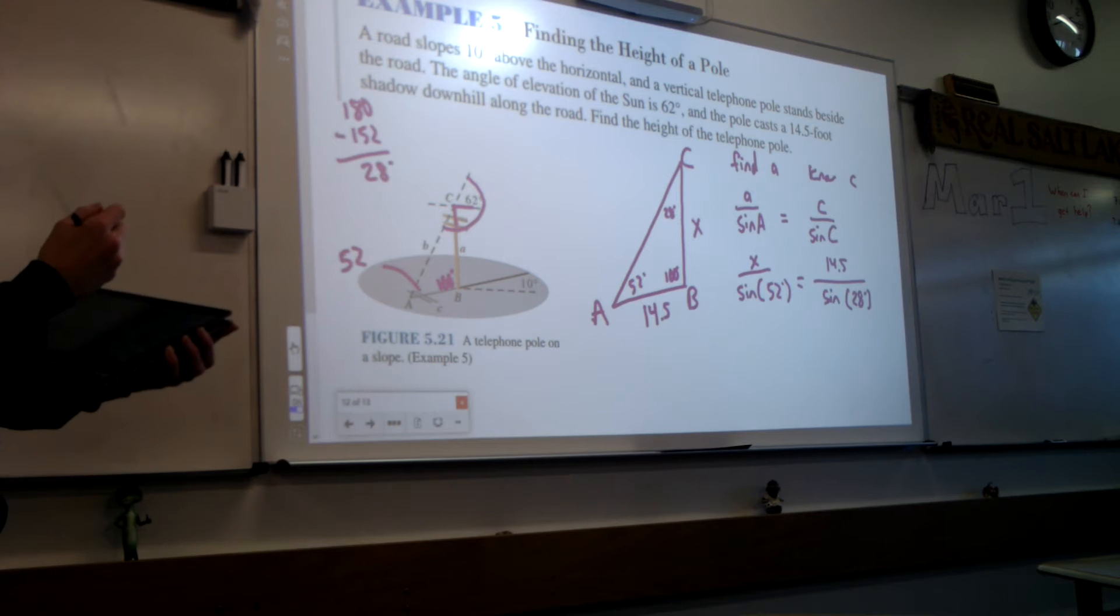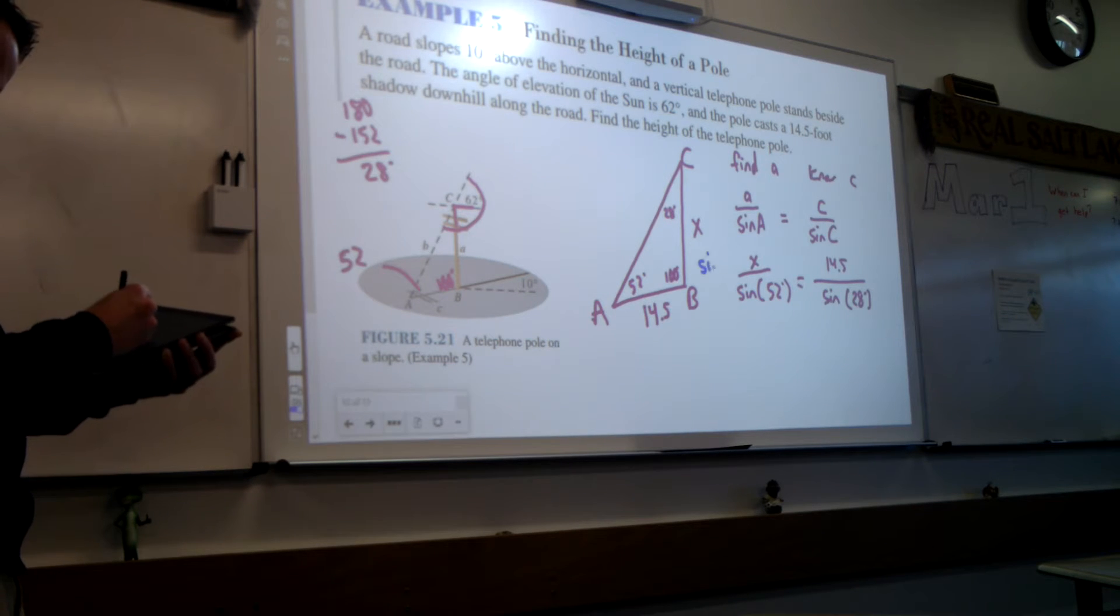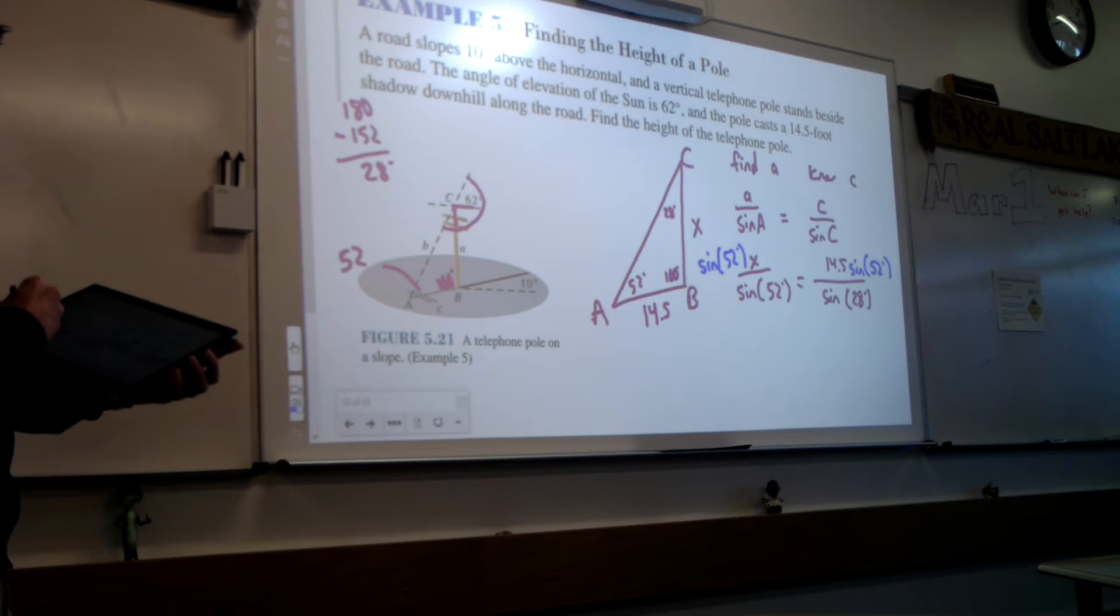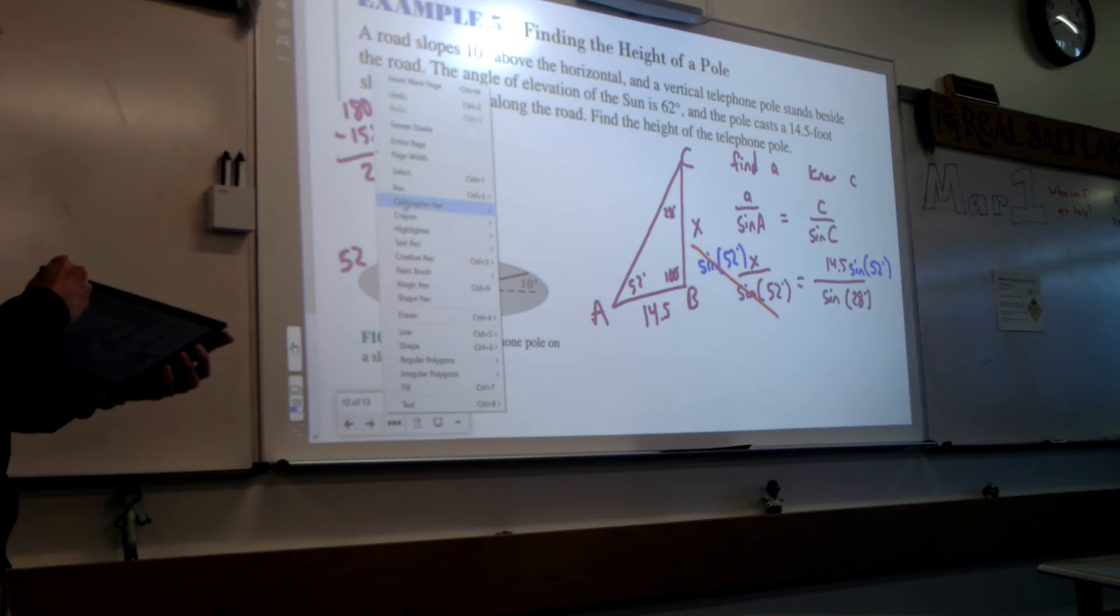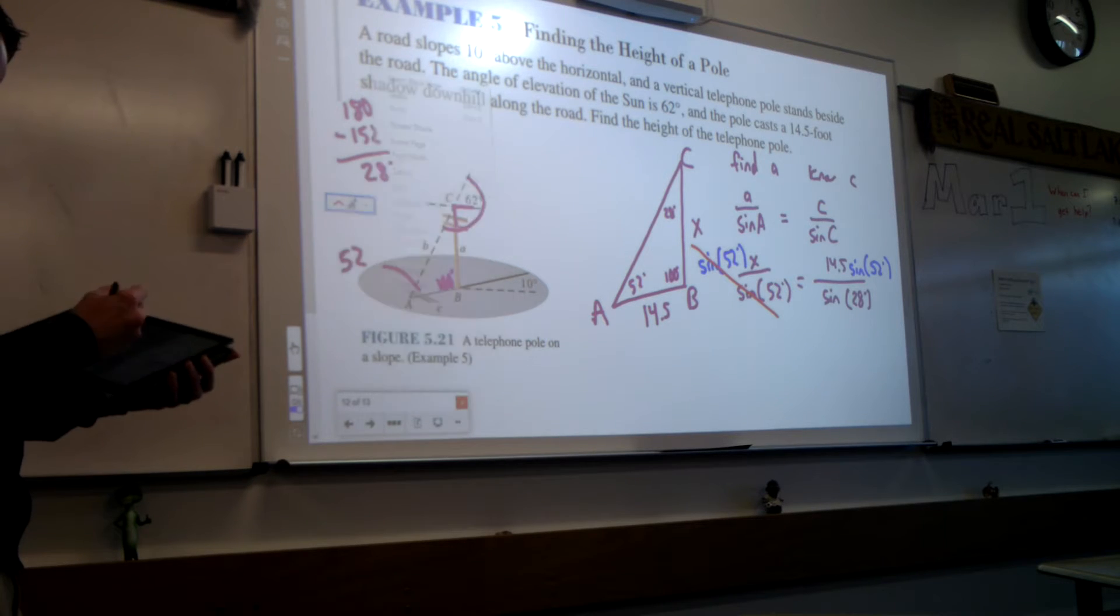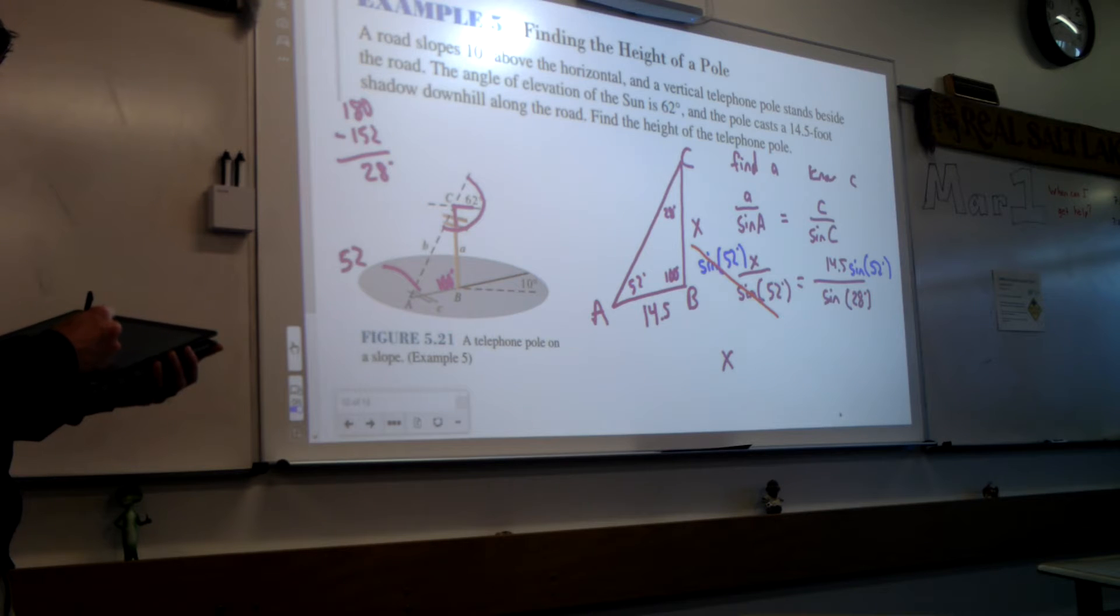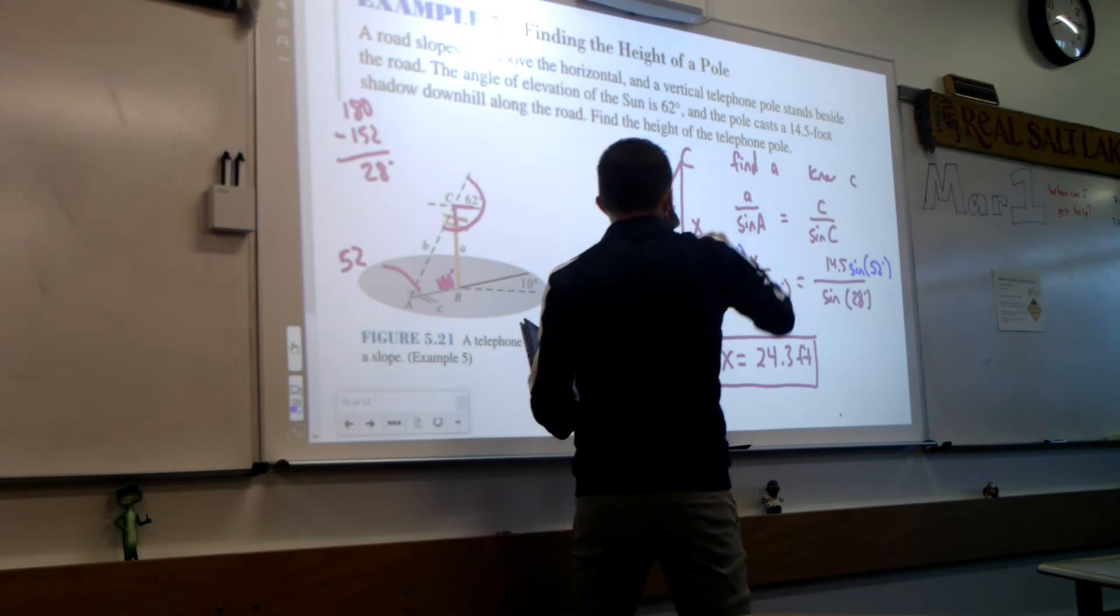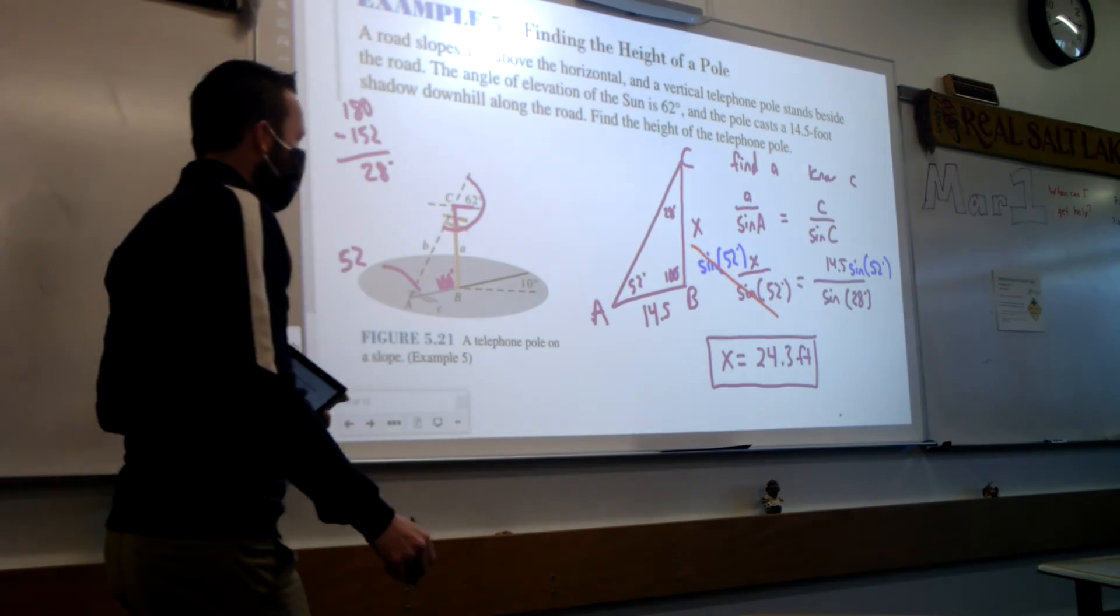Great. Now we just want to solve for X. What would I need to do on both sides? Will you go ahead and plug that into your calculator? Let me know what that gives you. 24.3. And that is B. In the context of the problem, does that seem to make sense? If this shadow right here is 14.5, that the pole is 24? Yeah, that seems to make sense.